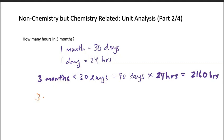So three months times in one month, we want to find out how many days. So 30 days, and then the months are gone. And in one day, we want to find out how many hours. So 24 hours.